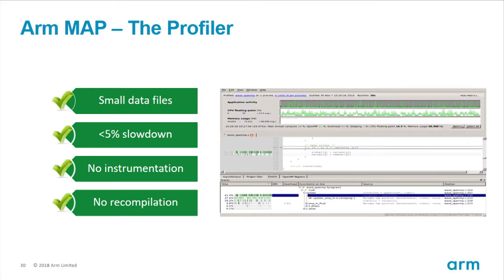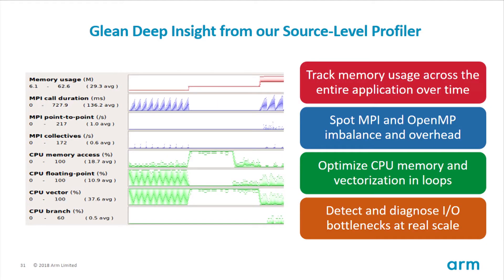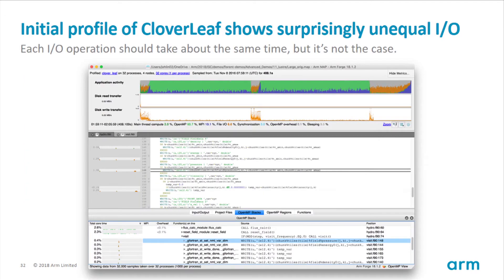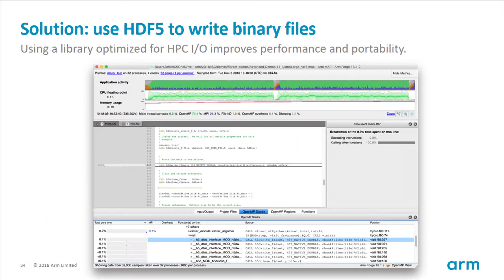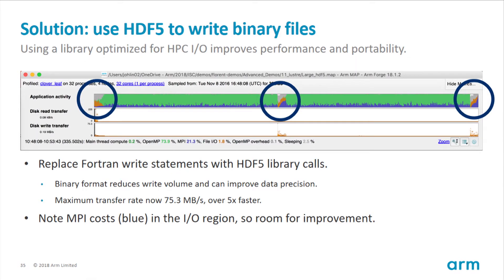I'll quickly go over Map since I'm running over time. Map is our profiler — it's nice and lightweight, designed not to slow down your code. Left to right is your code's timeline from start to finish. You can identify imbalances immediately like the blue sawtooth pattern, which indicates a load imbalance where MPI ranks are waiting for one another. In a Cloverleaf test case with IO, it took about 8.6% of the time with a max throughput of only 14 MB/s. By switching to HDF5, throughput went up to 75 MB/s with a significant impact on runtime.